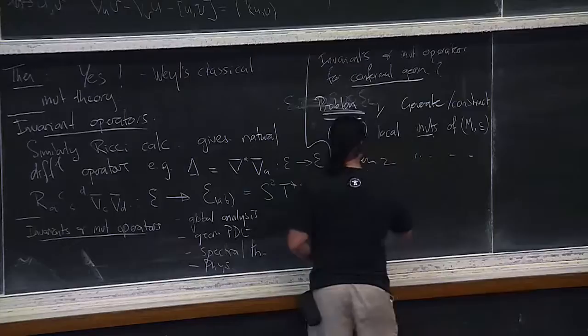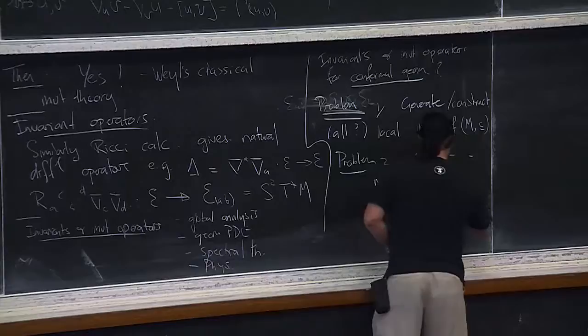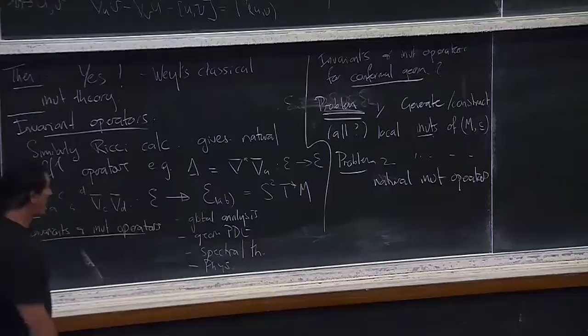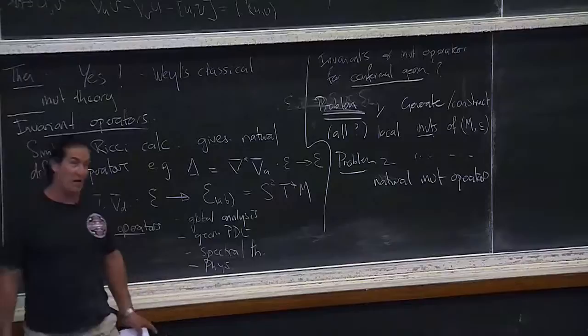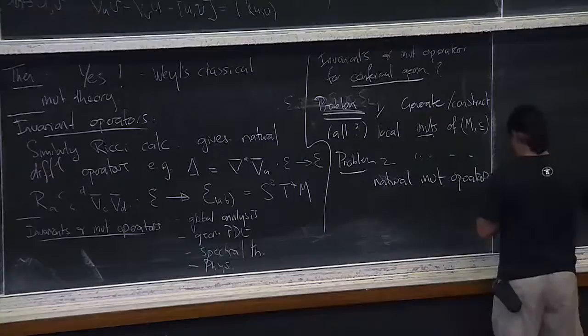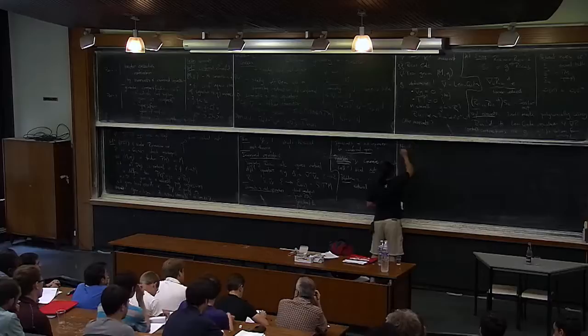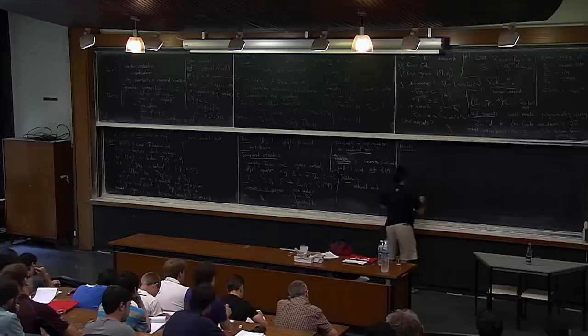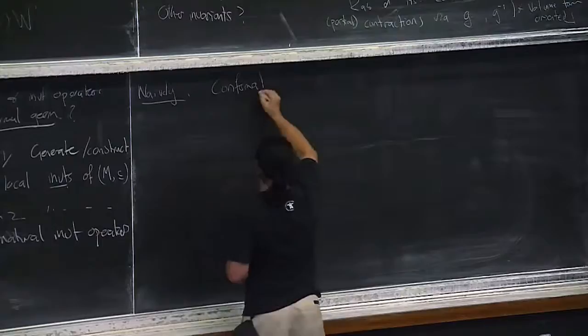We'll attack this naively — basically the way I just described — by looking at how the Levi-Civita connection changes under conformal transformations and working from there. So you look at conformal transformations. Remember we said the metric determines the Levi-Civita connection.